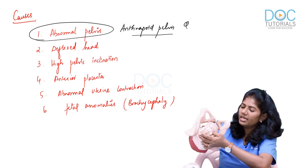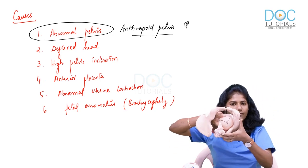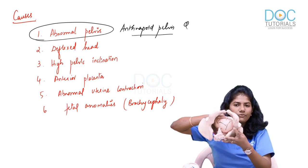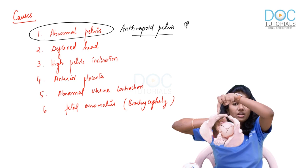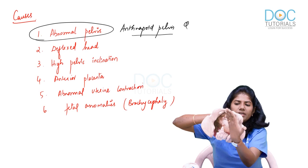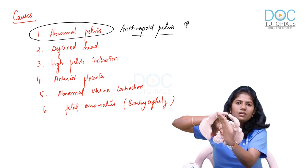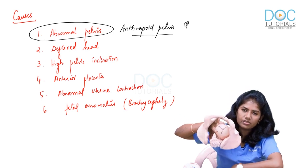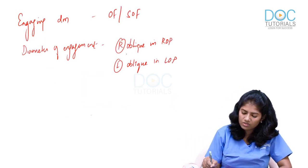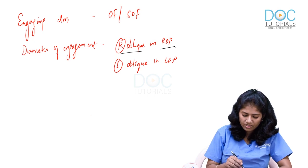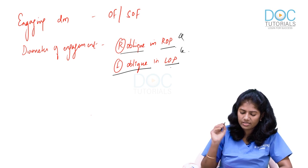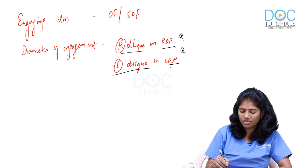Similarly, in left occipito-posterior position, the sagittal suture begins at the left sacroiliac joint and ends at the right iliopectineal eminence — that is the left oblique diameter. So in right occipito-posterior, the diameter of engagement is the right oblique diameter; in left occipito-posterior, it is the left oblique diameter. These are two important MCQ points.